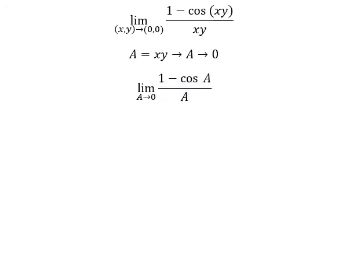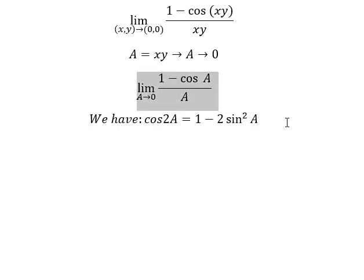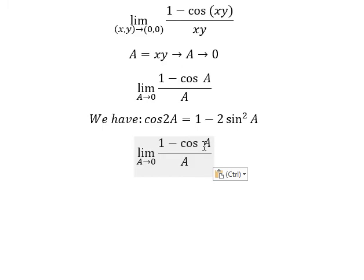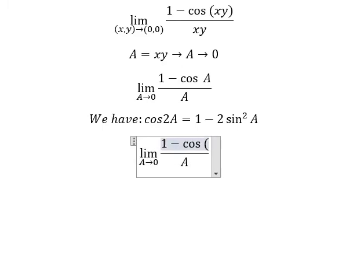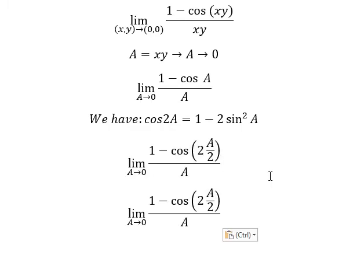Next we have the formula cos 2A equals 1 minus 2 sin² A. We know that cos A, that is about 2 multiplied by A over 2. So we need to change from this one into this one.